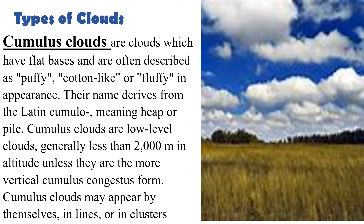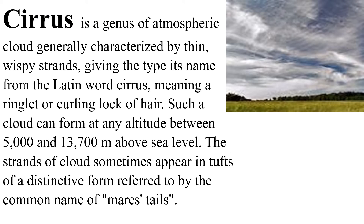Cirrus clouds are a genus of atmospheric cloud generally characterized by thin, wispy strands. The name comes from the Latin word meaning a ringlet or curling lock of hair. Such clouds can form at any altitude between 5,000 and 13,700 meters above sea level. The strands sometimes appear in a distinctive form referred to as mare's tails.